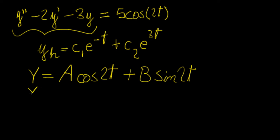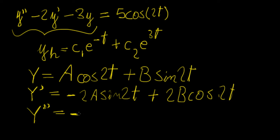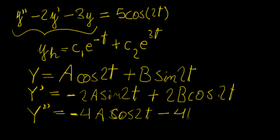So what are we going to do with this? We're just going to differentiate it. So y_p' is going to be minus 2A·sin(2t) plus 2B·cos(2t), and y_p'' is going to be minus 4A·cos(2t) minus 4B·sin(2t).